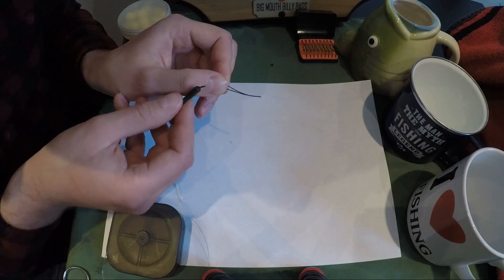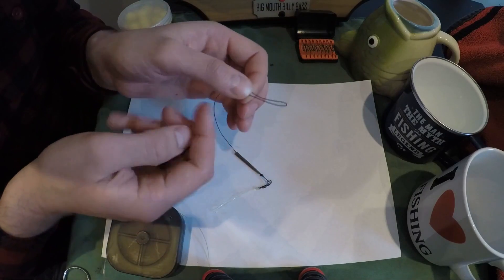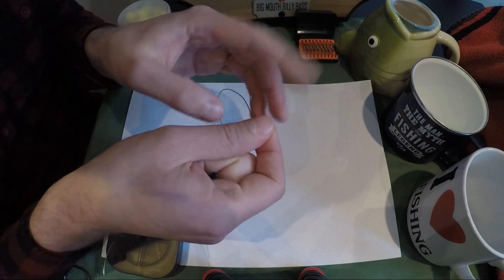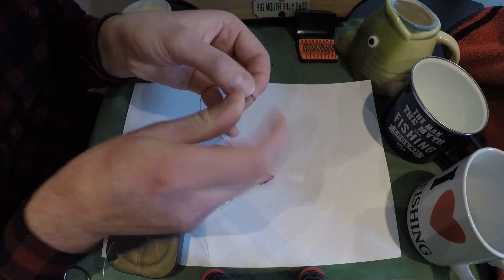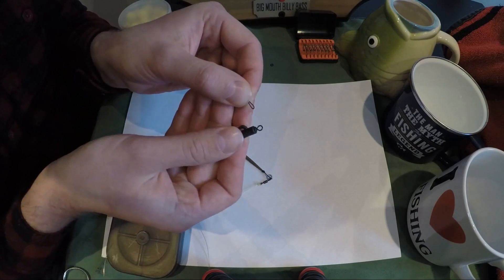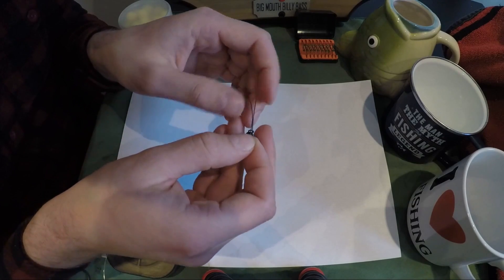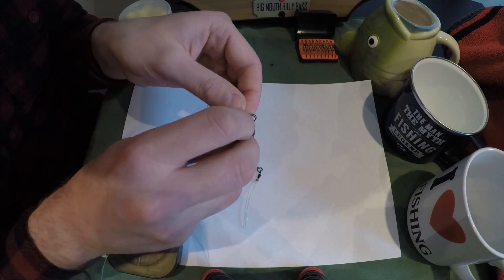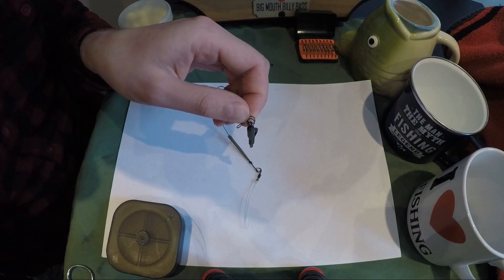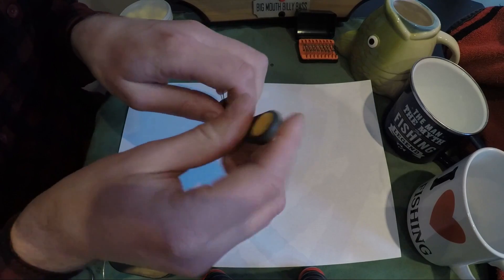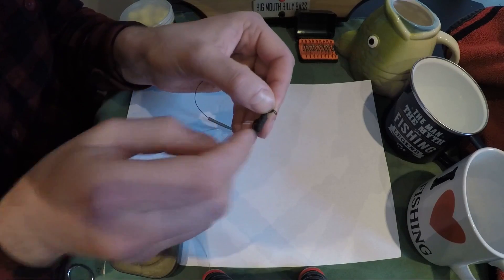When it comes to attaching the boom section to my lead clip, I prefer a palomar knot. So you form a loop in the end of the line there, push it through the eye of your lead clip, just tie a single overhand knot. You might want to use a baiting needle to help yourself out here.